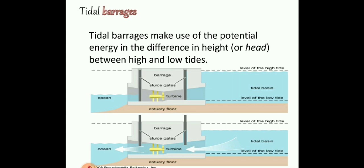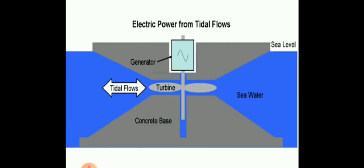Looking at the cross-sectional figure of the tidal barrage, you can see two water levels and the water flow. There is a turbine connected to a generator that produces electrical power from tidal flows.